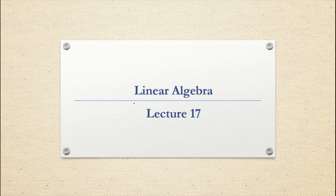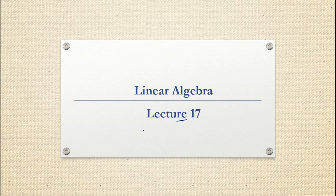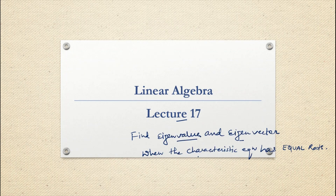Hello everyone, I am Monica Bhushan and today we are starting lecture number 17 of Linear Algebra. Since the last two classes we are studying eigenvalues and eigenvectors. Last class we found the eigenvalues and eigenvectors of a matrix where the characteristic equation had distinct roots. In today's class we are going to find the eigenvalue and eigenvector of a matrix where the characteristic equation has equal roots.